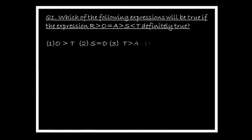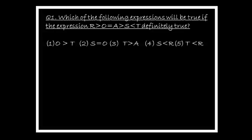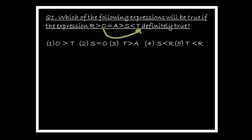Here is a question: which expression is definitely true if r greater than z, o equal to a, greater than s, less than t? Taking option one: o greater than t — draw a forward arrow from o to t. Symbols between o and t: equal to, greater than, and less than — equal priority conflict. So the relation between o and t cannot be determined, and option one is wrong.